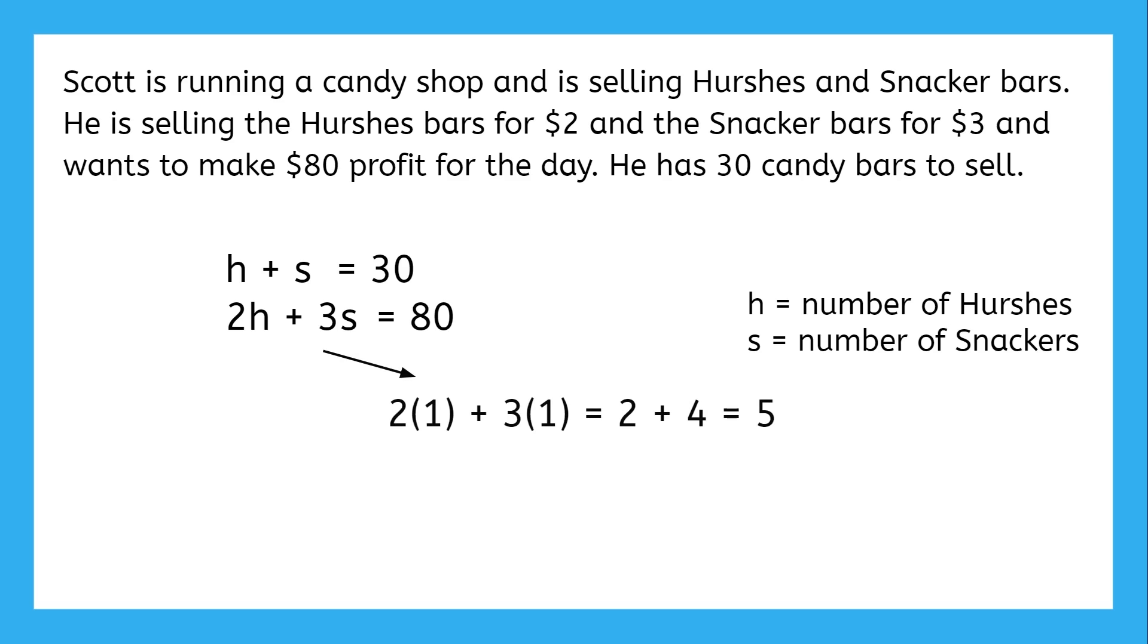If Scott sells one of each, he'll make $5. If he sells two of each, then he'll get $4 from Hershey's and $6 from snacker for a total of $10.